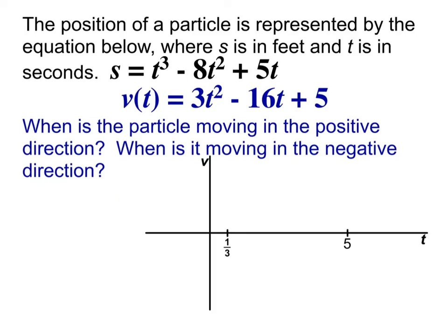If I actually put those numbers in, I have a couple of ways to answer this. One is to sketch the graph. Based on this equation, it's t squared so it's a parabola — and since it's a positive t squared term, it's opening upward. So we know it's doing something like that. From zero up to one-third, is it moving in the positive or negative direction? It's positive — because it's above the x-axis, meaning my velocity there is a positive number, and a positive velocity means moving in the positive direction.